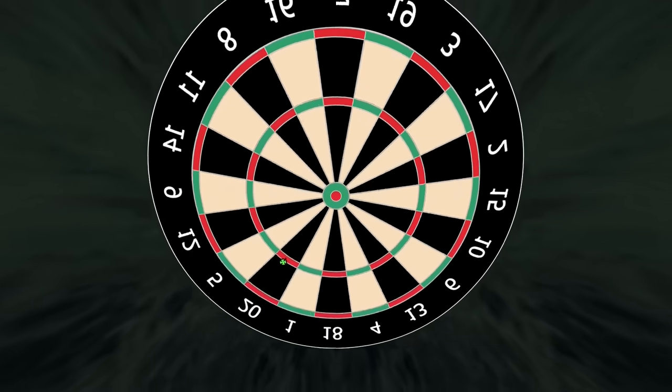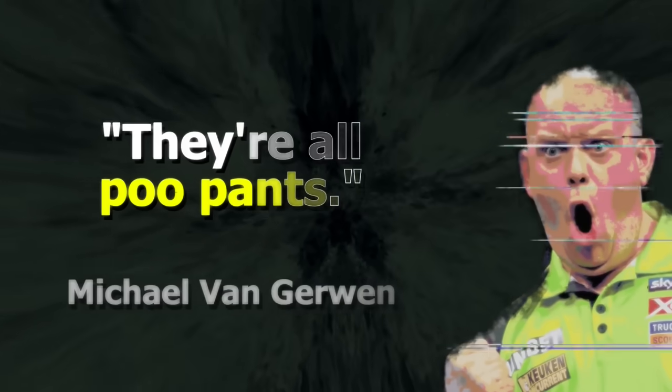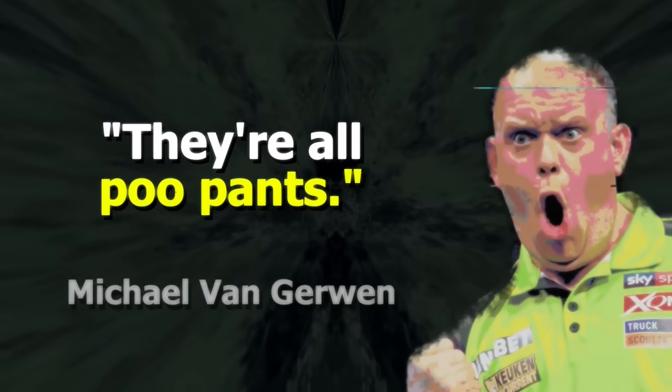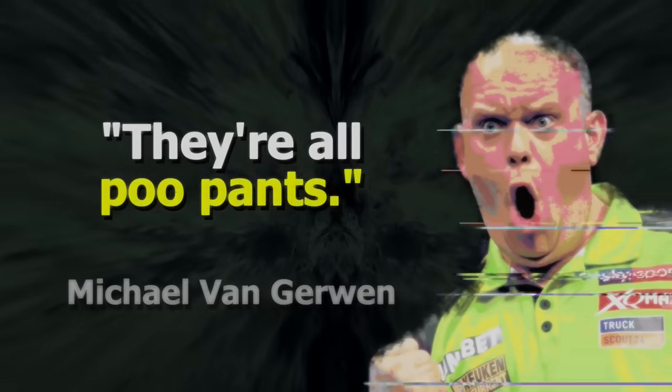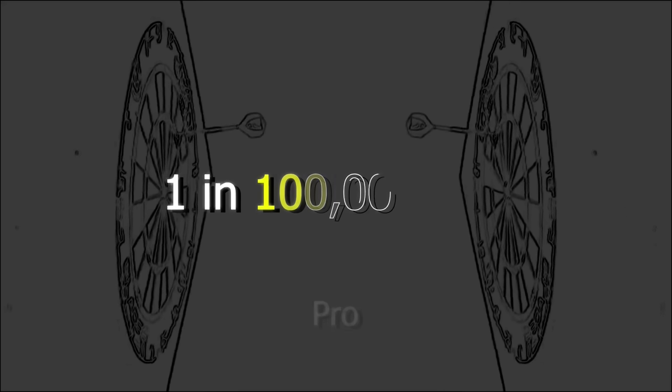No one has ever managed to hit two nine darts in a row in any kind of official event. But Michael van Gerwen came very close in 2017, where he threw 17 perfect darts just missing the last double 12. The chance of a 100 average player managing two in a row is 1 in 100 million.